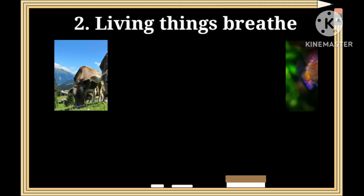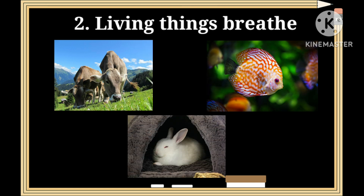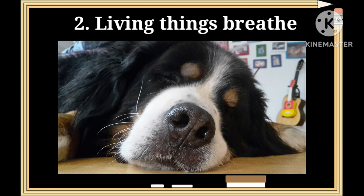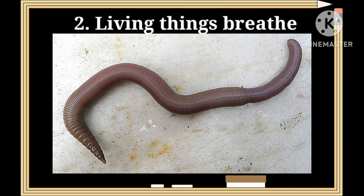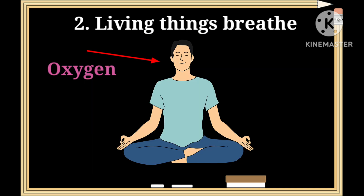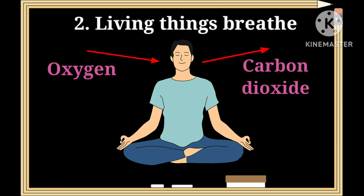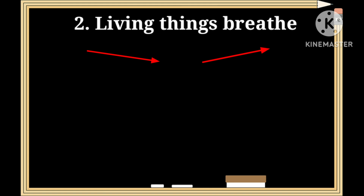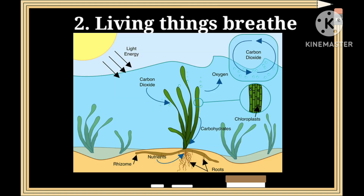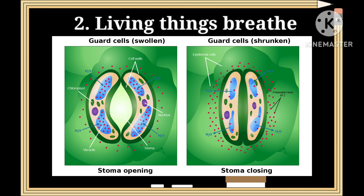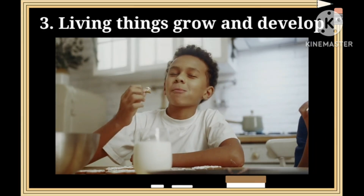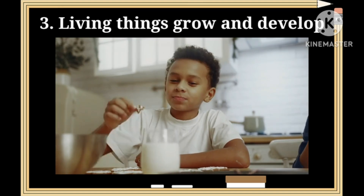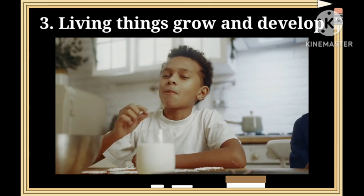Number two: living things breathe. Different animals use different organs to breathe. Some animals use their nose, fishes use their gills, and worms use their skin. We breathe in oxygen and breathe out carbon dioxide through our nose. Plants breathe through openings present in the leaves called stomata.